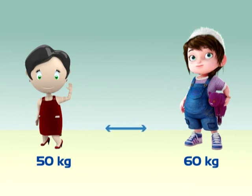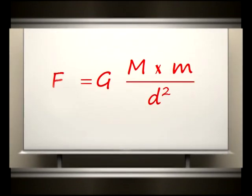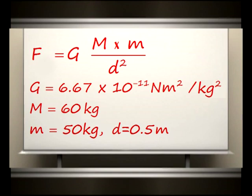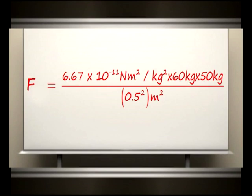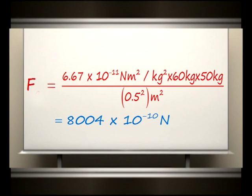Two persons of mass 60 kg and 50 kg stand at a distance of 0.5 m from each other. What will be the force of gravitation between them? F = G×M×m / d². G = 6.67 × 10⁻¹¹ N·m²/kg², M = 60 kg, m = 50 kg, d = 0.5 m. F = (6.67 × 10⁻¹¹ × 60 × 50) / (0.5)² = 8004 × 10⁻¹⁰ N. This force is negligible to attract two persons to each other.